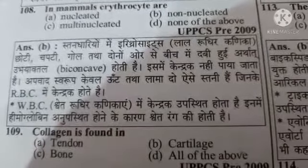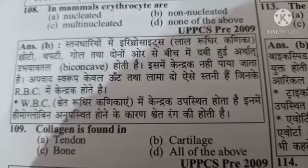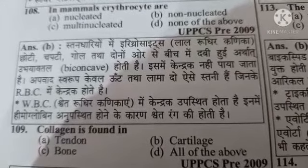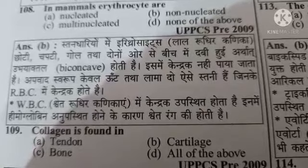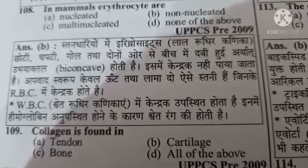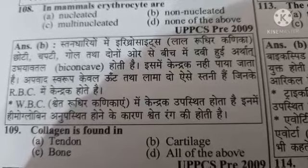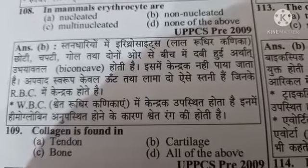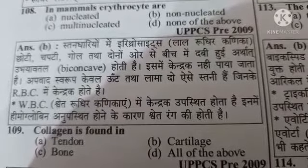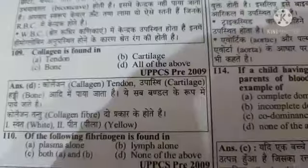Next question: collagen is found in — Option A: tendon, Option B: cartilage, Option C: bone, Option D: all of the above. The correct answer is Option D: all of the above.